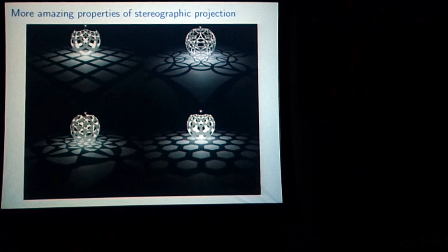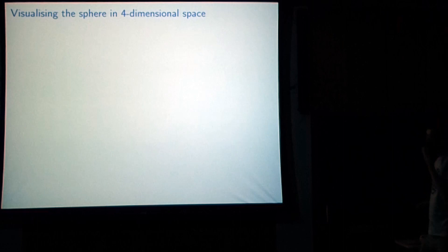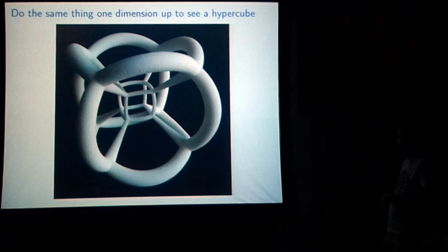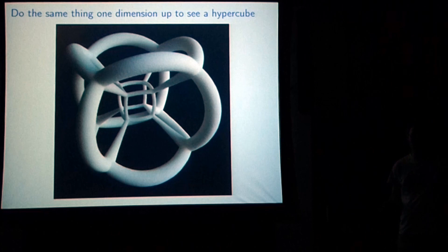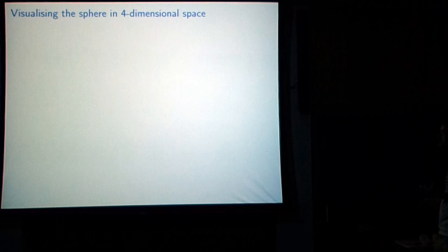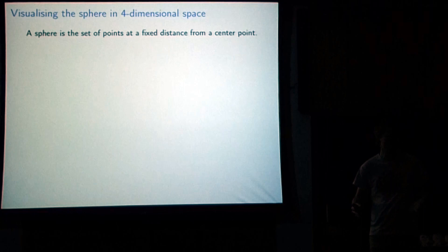I mentioned very briefly the sphere in four-dimensional space. But what does this mean? What is the sphere? We can try to visualize this — as always, we go back to three-dimensional space to understand what's going on, and then use that to understand by analogy what's going to happen in four-dimensional space. A sphere is the set of points at a constant radius from some center.